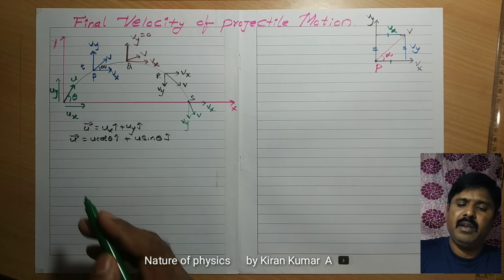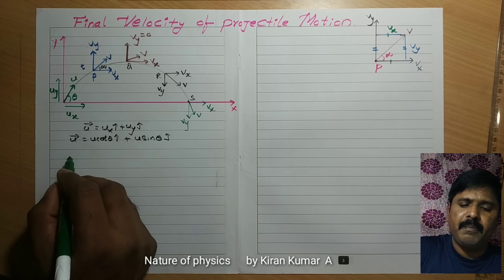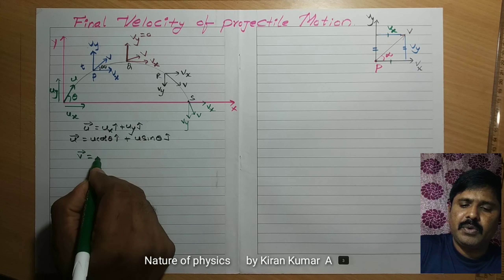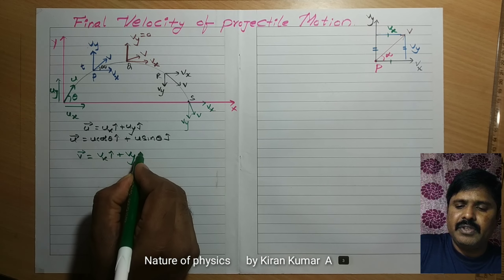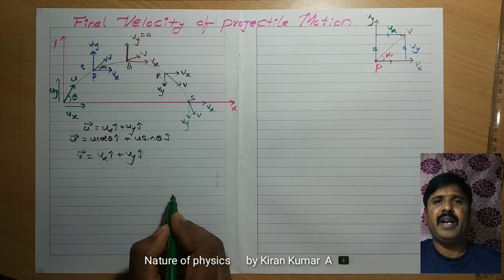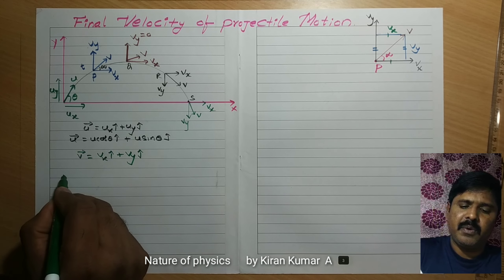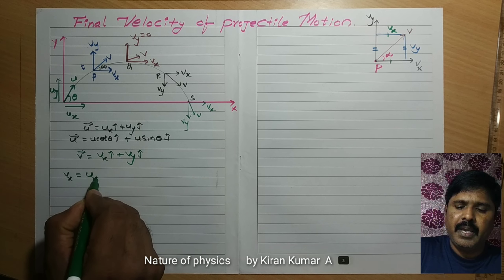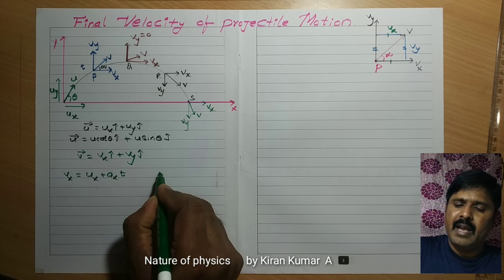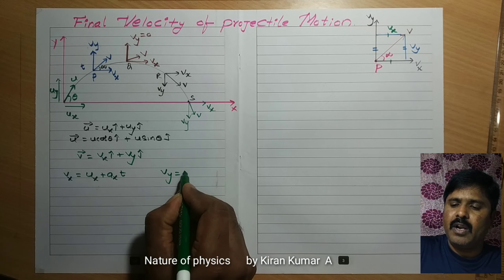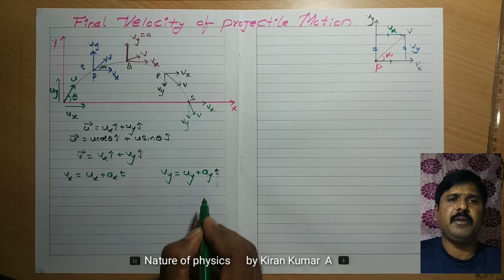For final velocity also, the same method: V bar is equal to Vx i cap plus Vy j cap. I have to find Vx and Vy. So for this, Vx is equal to Ux plus Ax into T, and Vy is equal to Uy plus Ay into T.